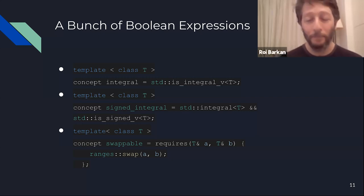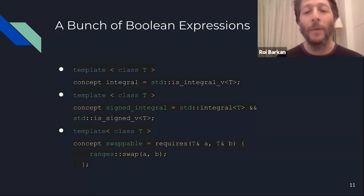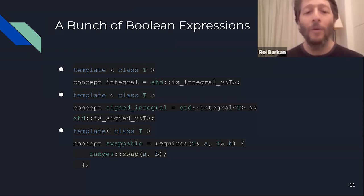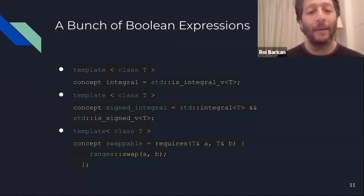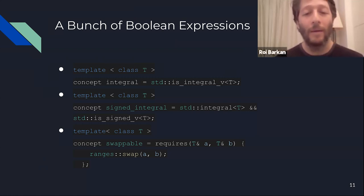The third and newest way to create concepts is using what's called a requires expression. It looks like a code block — code that won't actually be executed, but will be checked for correctness. The requires expression will be true if the code inside it is legal C++. You can write multiple statements, and you can also use the -> operator to indicate the return types you'd like expressions to evaluate to.